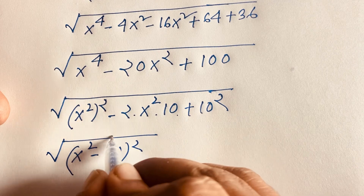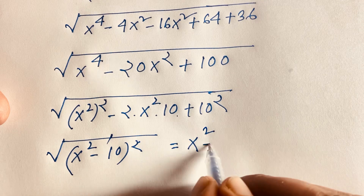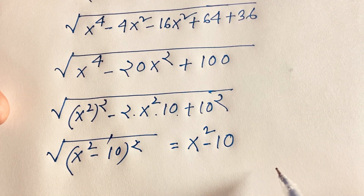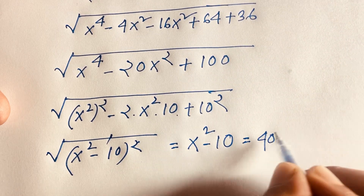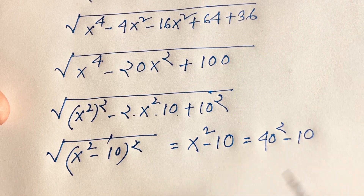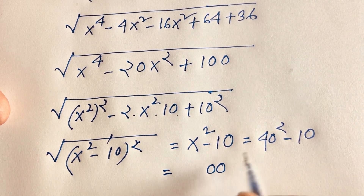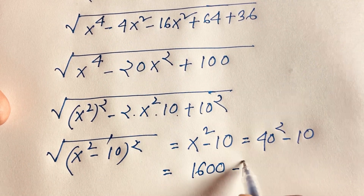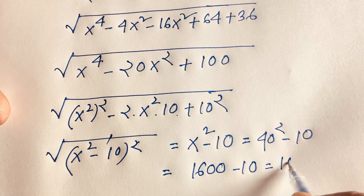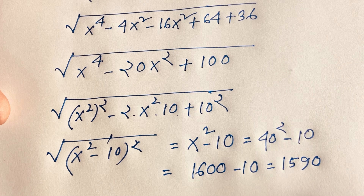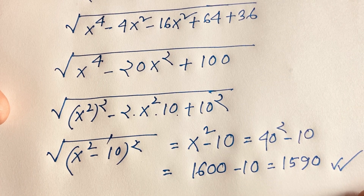The square root cancels with the square, giving us x squared minus 10. Recalling that x equals 40, we compute 40 squared minus 10. Since 40 squared equals 1600, we get 1600 minus 10, which equals 1590. This is our final answer.